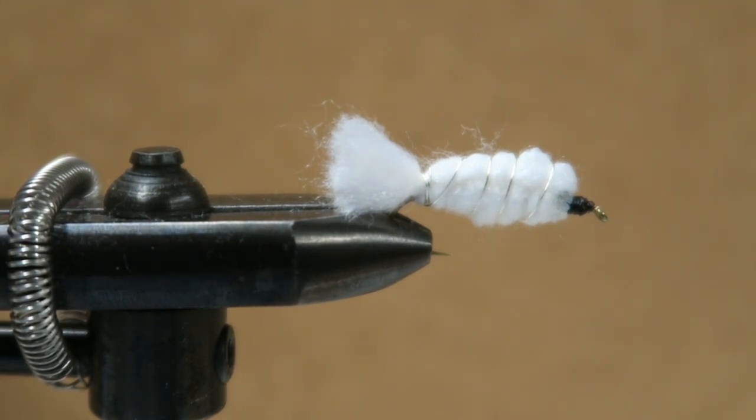So there it is, the baby doll fly. That's the traditional way to tie it: white yarn, silver wire, black thread. But of course you can customize it and do any variation that you want.